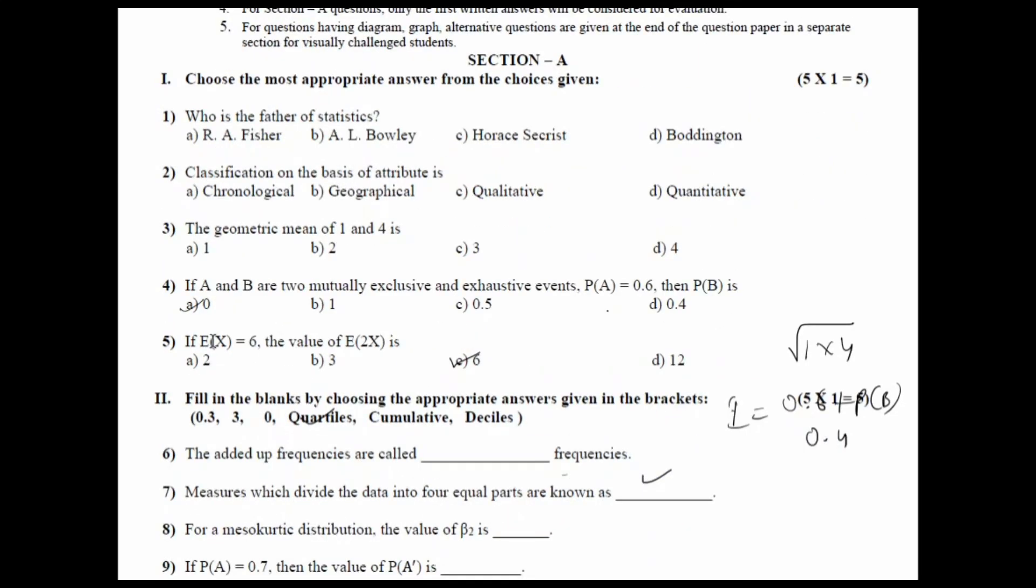Fifth question, if expected value of x is equal to 6, then expected value of 2x. Let me solve it here. Expected value of Ax is equal to A into expected value of x. So, expected value of 2x is equal to 2 times expected value of x. So, the right answer here is 12. These are your multiple choice questions.